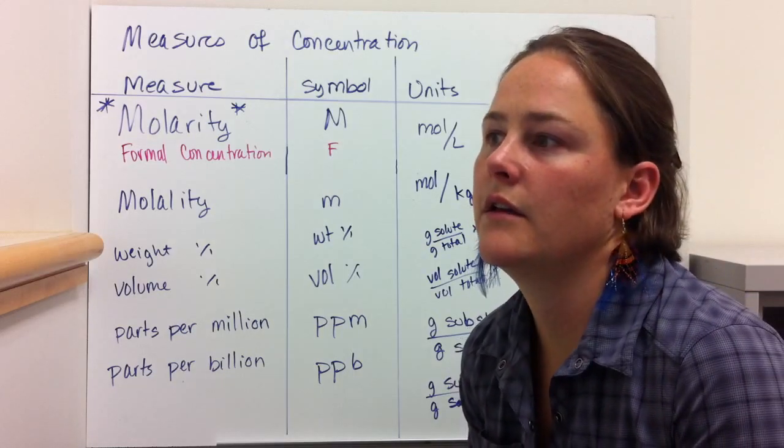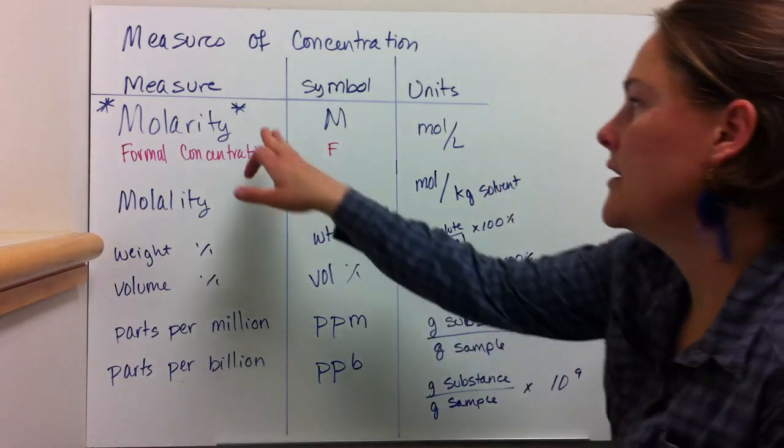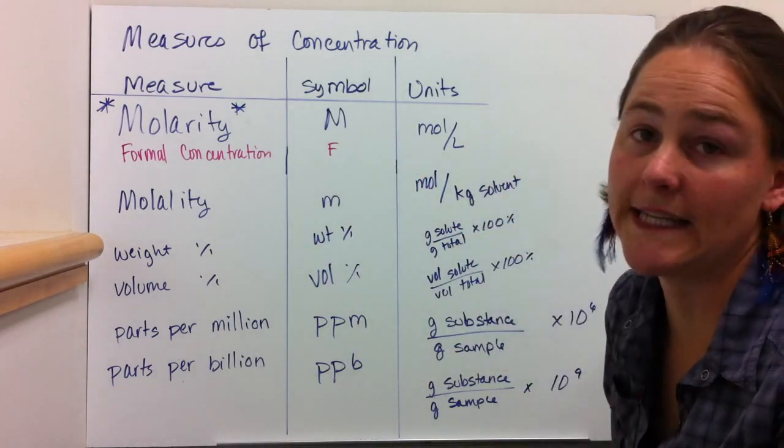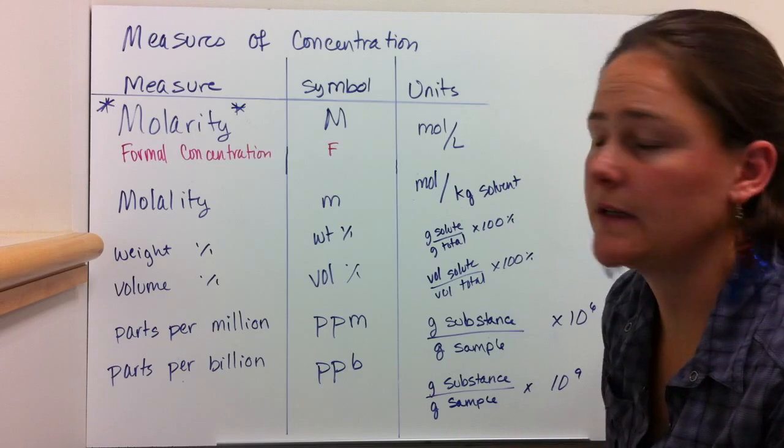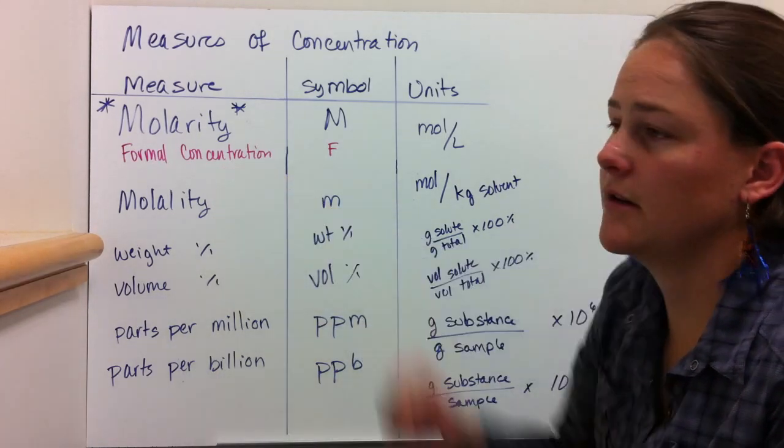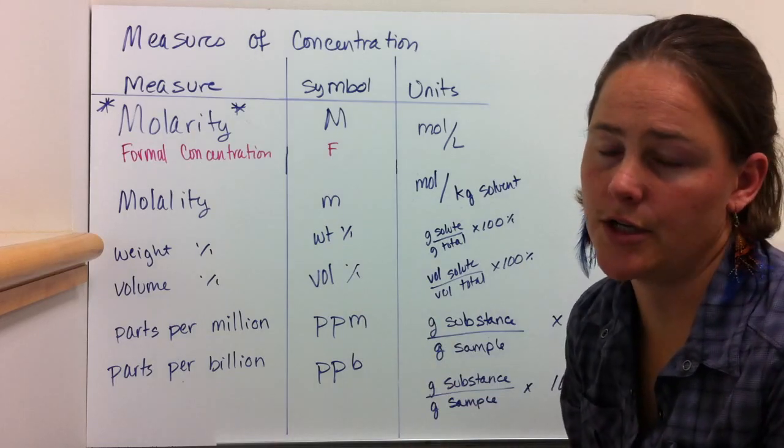So here, molarity, symbol M, quantity or units are moles per liter. It's super common, easy way to quantify things. And a subset of that is formal concentration, and that's used for electrolytes.